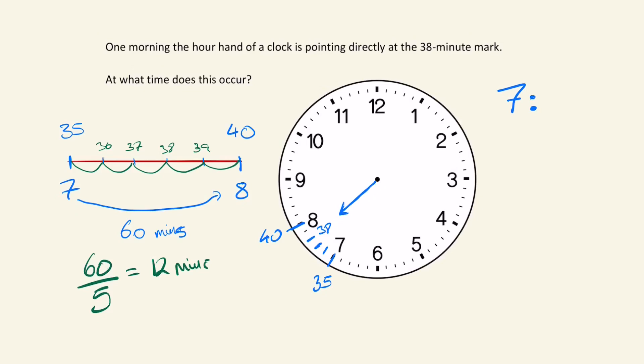So what that would mean is that if this stage here is 7 o'clock, at this stage it would be 7:12, at this stage it would be 7:24, and over here at the 38 it would be 7:36. So what is the time? It's 7:36, and since we're told it's the morning, it's AM.